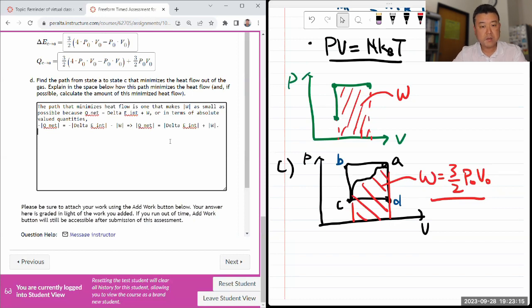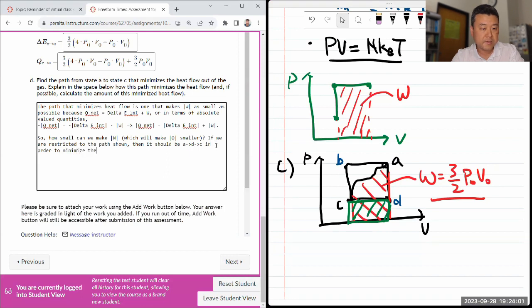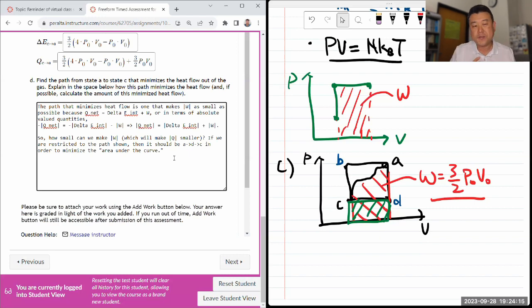How small can we make the absolute value of the work, which will make the absolute value of heat transfer smaller? So if we are restricted to the path shown, then it should be A to D to C, because this will minimize the area under the curve, which is the minimum you could have with the path shown, in order to minimize the area under the curve. And you could calculate the amount of this minimized heat flow, totally fine. You can go ahead and do it. And this being an open-ended question, you can also answer with a little bit of creativity.